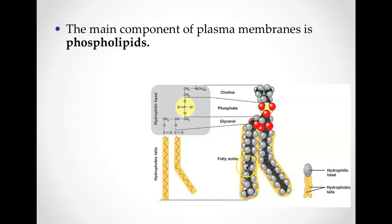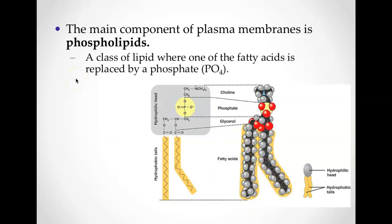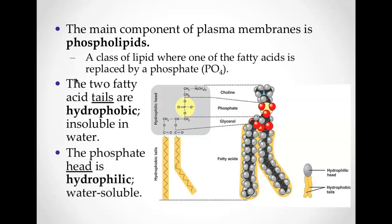This is why we do not dissolve whenever we get into a swimming pool — because our cell membranes are made up of fatty acid tails that are hydrophobic and don't dissolve in water. The two fatty acid tails are hydrophobic, insoluble in water, and the phosphate head is hydrophilic, which is water soluble.